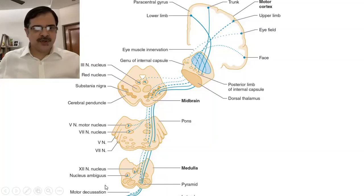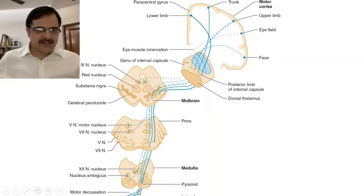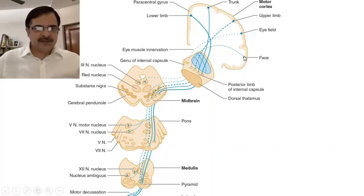From the pons they continue through the medulla, and just below the medulla they cross to the other side, supplying the opposite lower limbs. Similarly for the upper limbs, tracing this line — it goes again via the internal capsule, through the midbrain, pons, and medulla, then descends and just below the medulla crosses to the other side to supply the upper limbs.